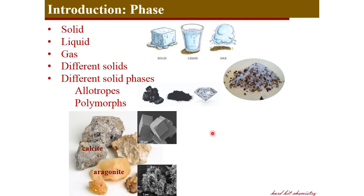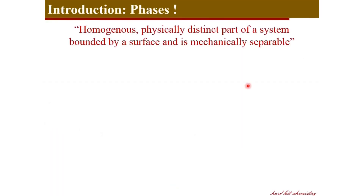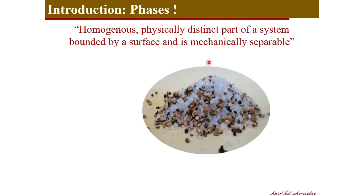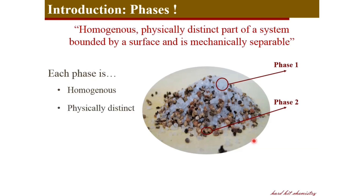This is how you distinguish phases: they differ for different physical states, different allotropes, and different polymorphs. Now the technical definition of phase: a phase is a homogeneous, physically distinct part of a system with a clear boundary and is mechanically separable from the rest. Consider salt and pepper mixture — salt forms one phase and pepper forms the second phase. Each is homogeneous within, physically distinct from the other, has a clear boundary, and can be mechanically separated.